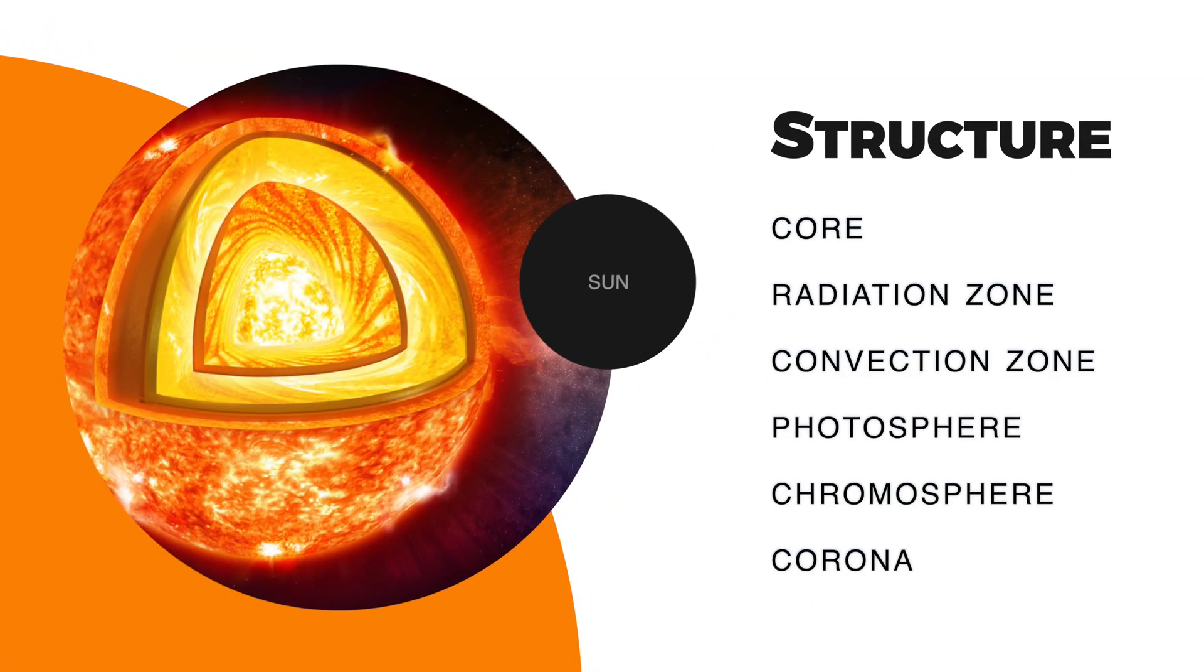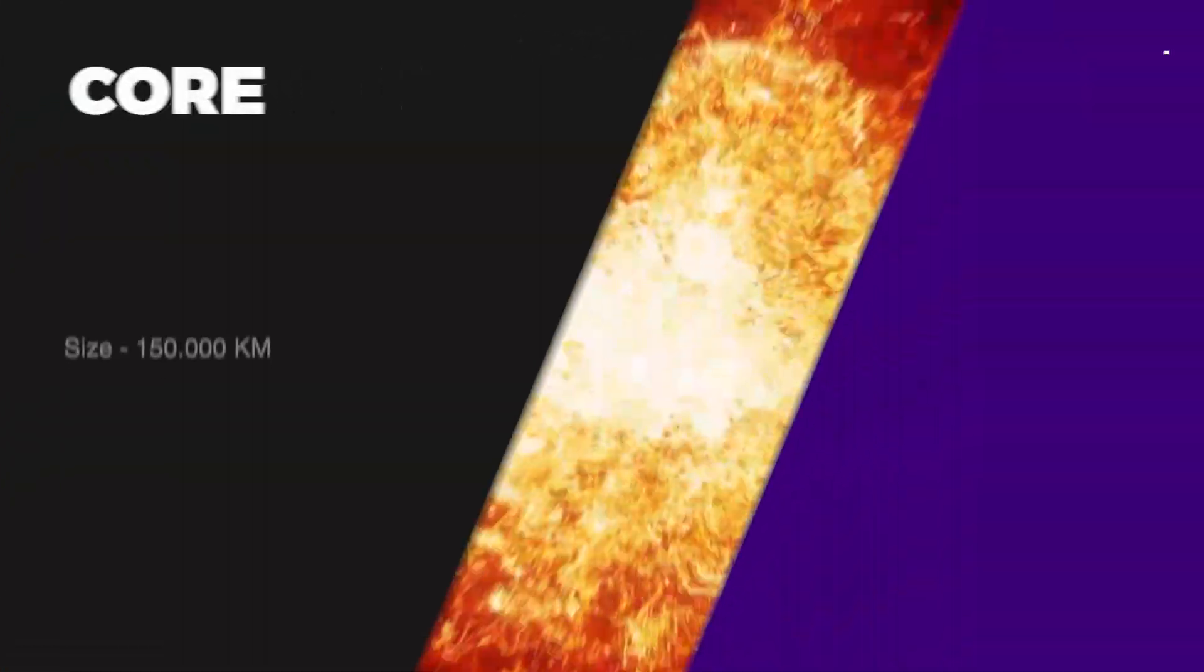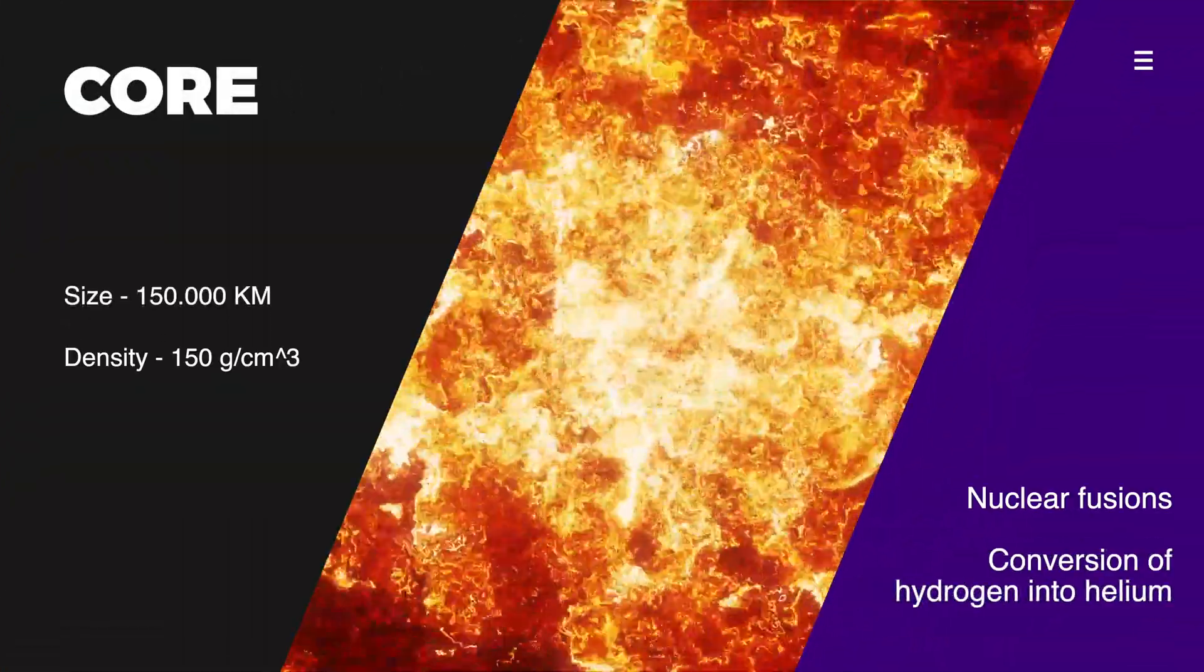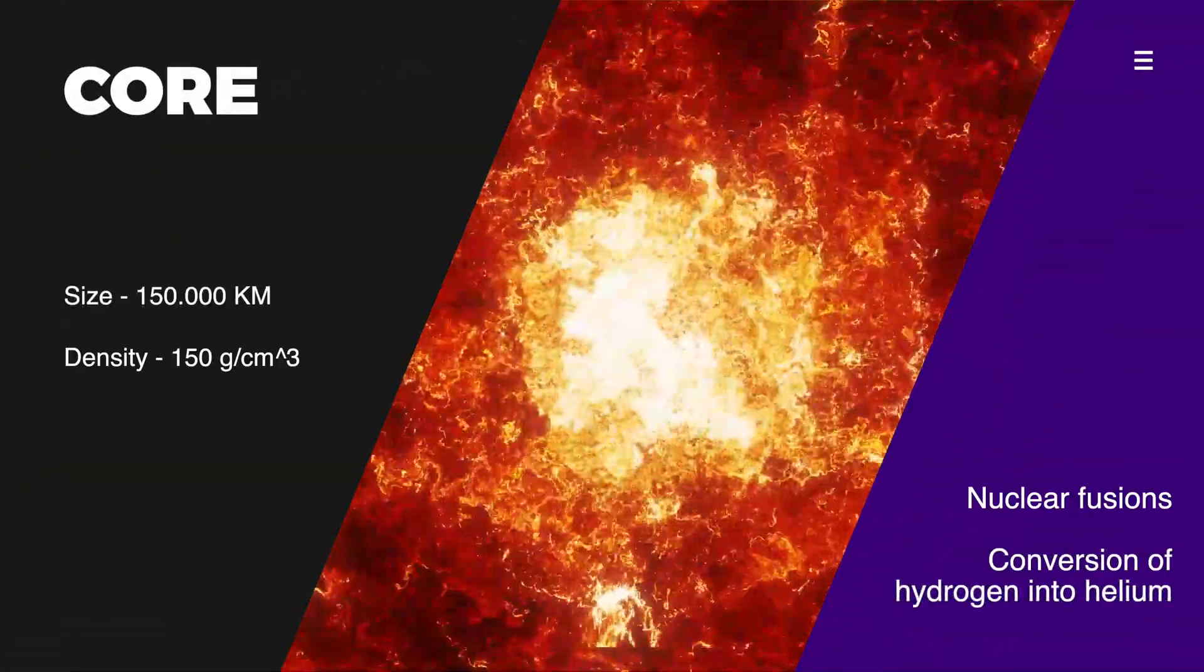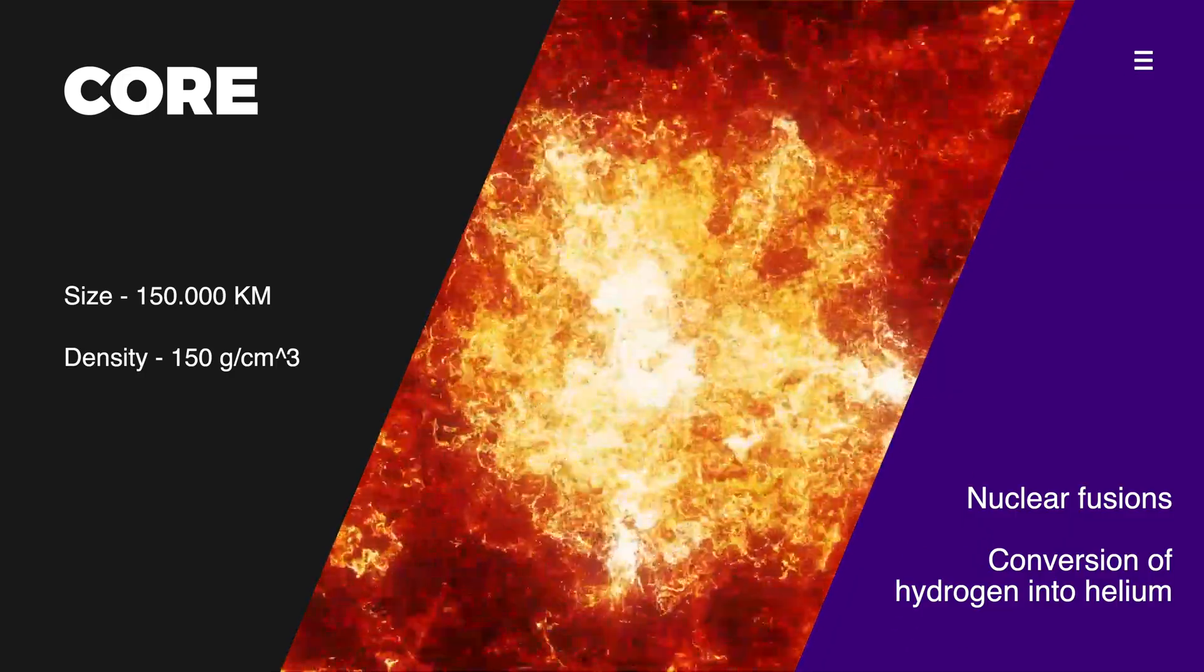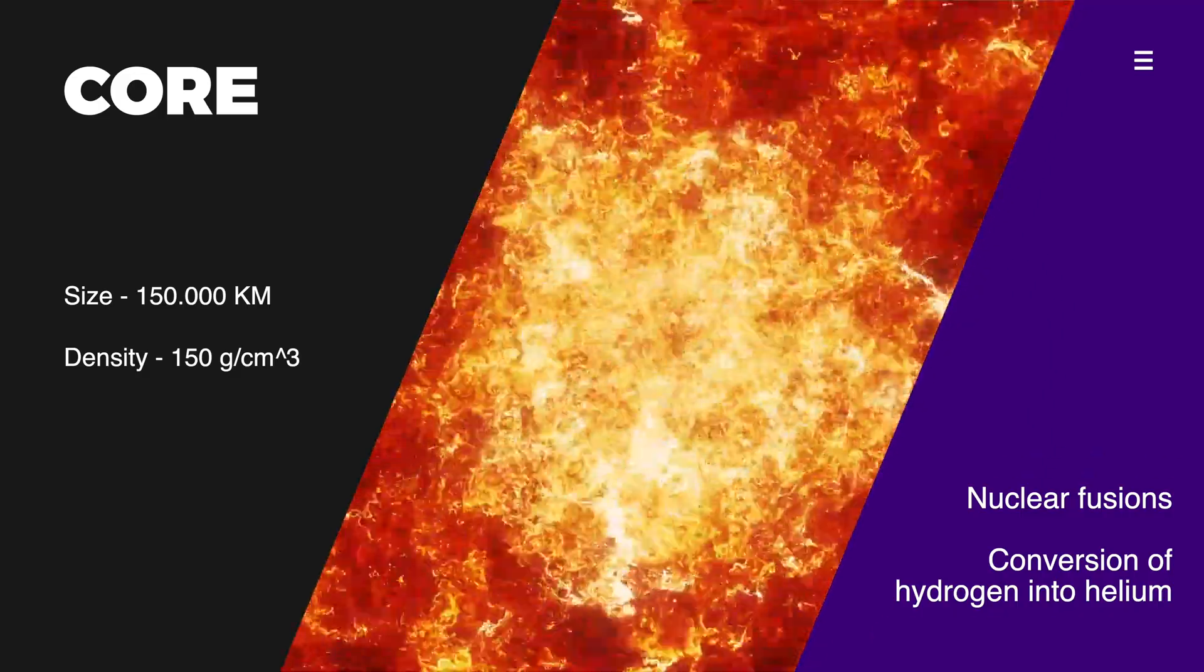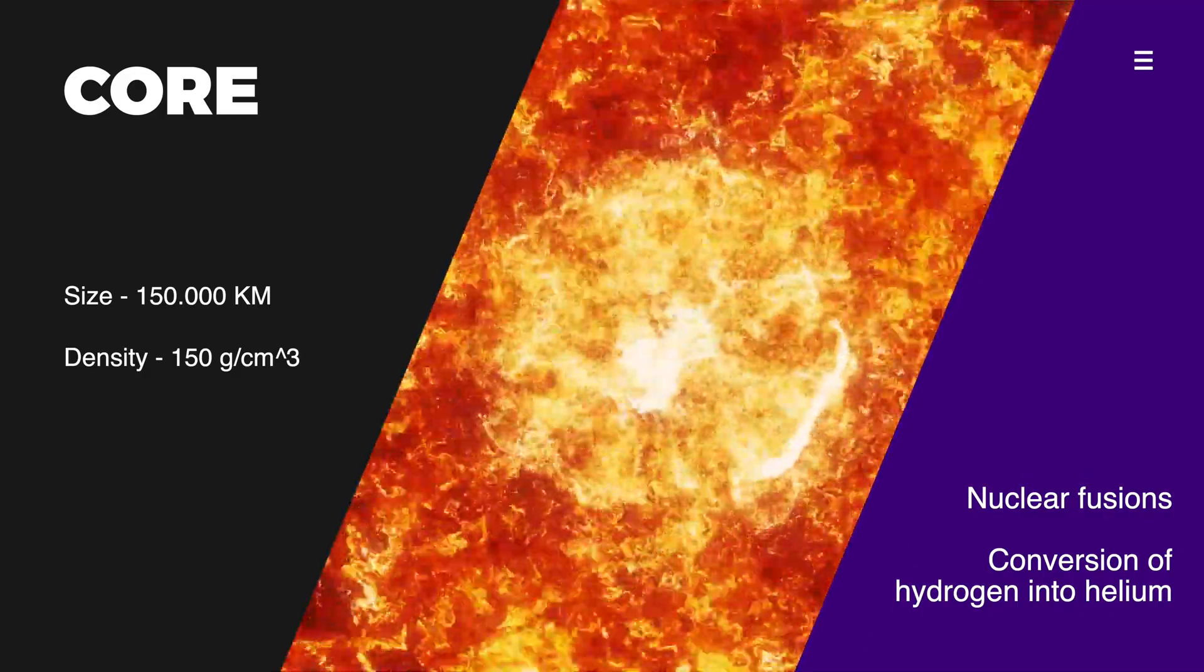Structure: The Sun consists of several layers. The core, about 150,000 kilometers in size, has a density of about 150 grams per cubic centimeter and is the location where nuclear fusion takes place. Nuclear fusion reactions take place here, converting hydrogen into helium.